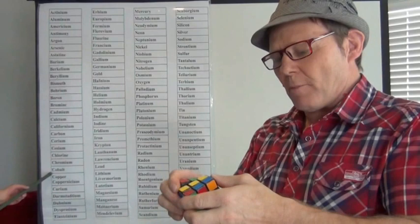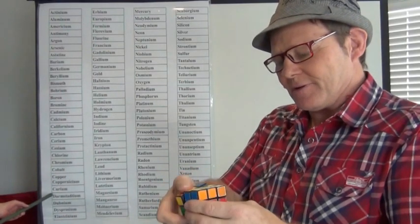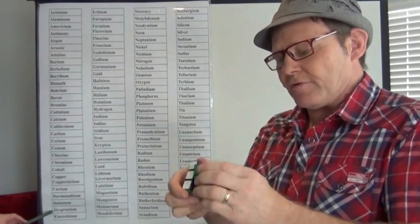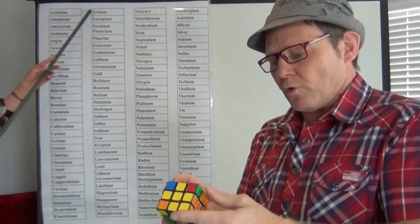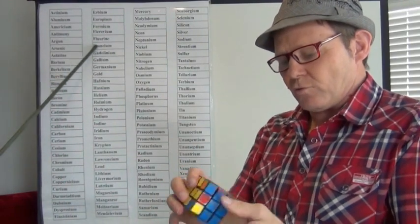Chlorine, Chromium, Cobalt, Copper, Copernicium, Curium, Darmstadtium, Dubnium, Dysprosium, Einsteinium, Erbium, Europium, Fermium, Flerovium.